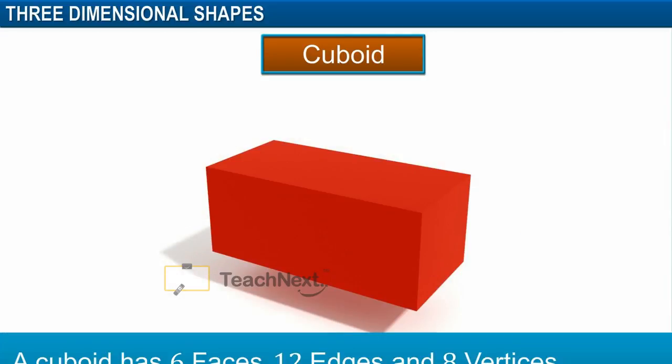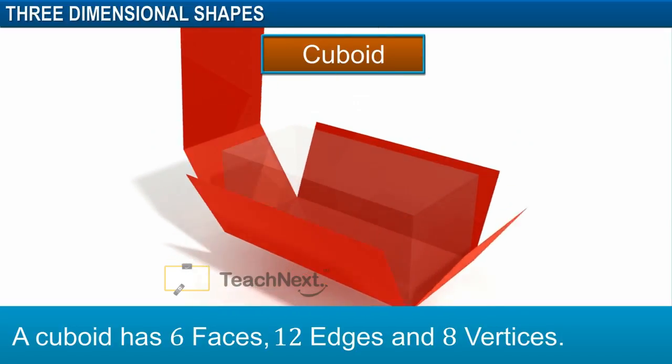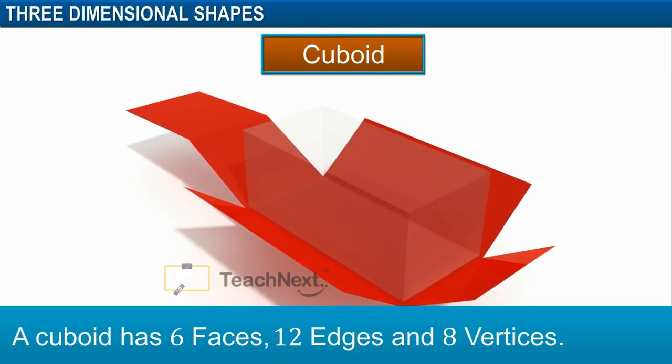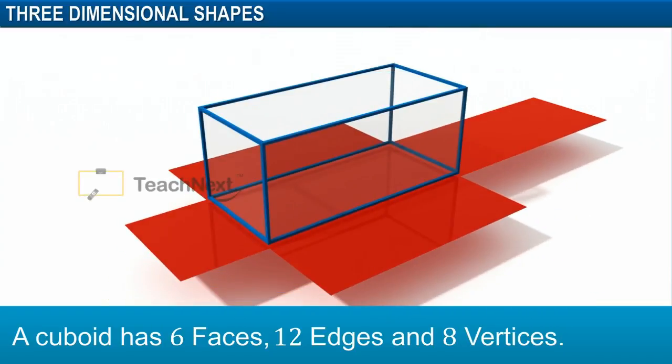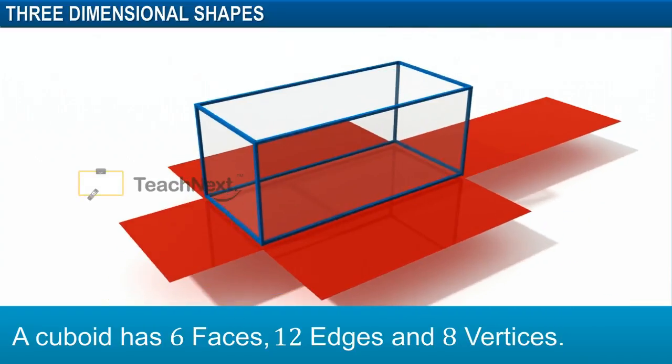To sum up, a cuboid has six faces, twelve edges and eight vertices.